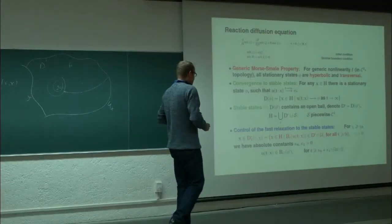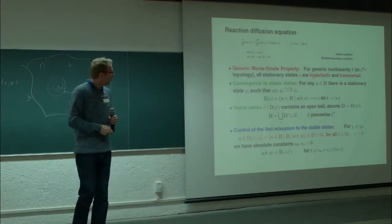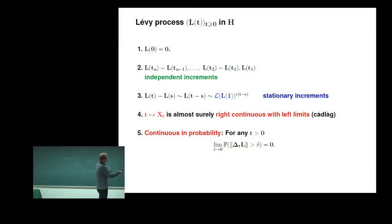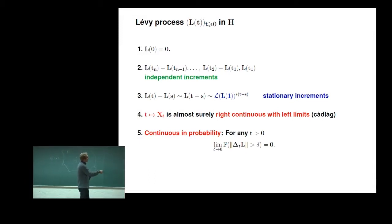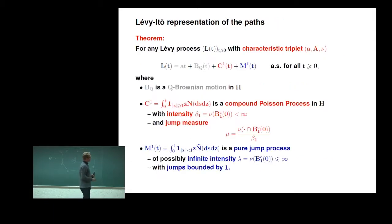These are the crucial properties of the deterministic system. Now coming to the perturbation: we have several definitions of a Lévy process — starting at zero, independent and stationary increments, right-continuous with left-hand limits, and continuous in probability. The important thing is that we have this Lévy process in the state space H, the same space where we solve the deterministic dynamical system, with the Lévy–Khintchine representation and the Lévy measure.